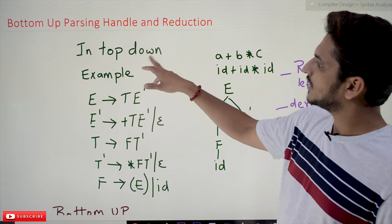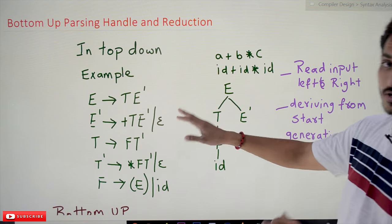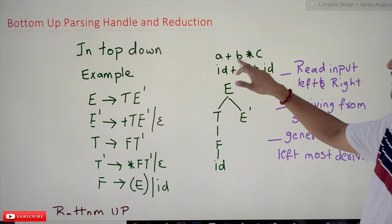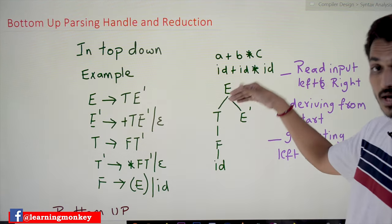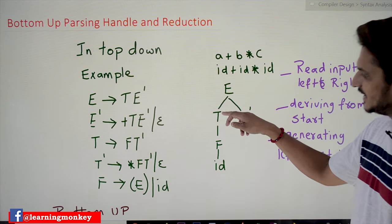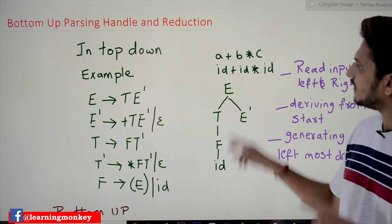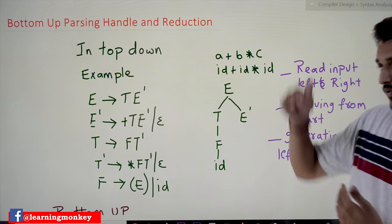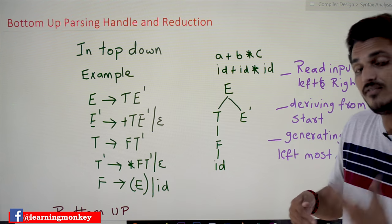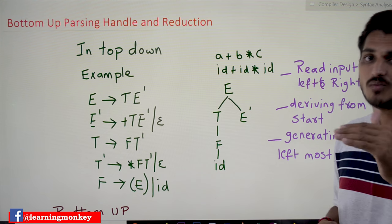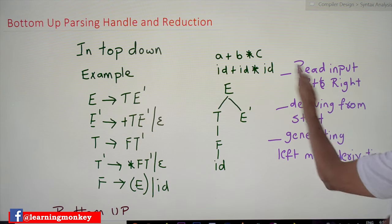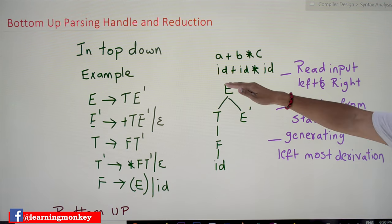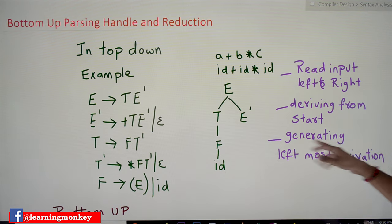In top-down parsing, this is the example we used to identify expressions. The input we considered is 'a plus b star c'. Whatever method you take — LL(1) or recursive descent parsing — we start from the start symbol E. E is expanded as T E-dash, T is expanded as F, F is expanded as id, and the first id symbol is identified from the input. We start from E and go down to identify the input symbols — that is top-down parsing. The key points are: reading input left to right, deriving from the start symbol, and generating the leftmost derivation tree by expanding terms.